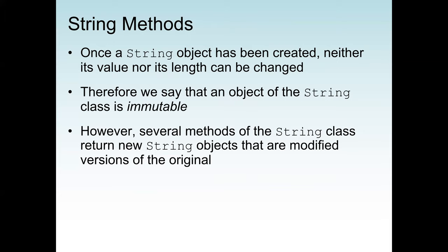An object of the String class is immutable — immutable means that once we create a String object with content, we cannot change that content directly. Neither its value nor its length can be changed directly. However, several String class methods return a new String object that is a modified version of the original. So when we create a string like title with 'Java software solution', we cannot change it directly — we can only use the existing String methods provided in the String class to produce a new modified version.